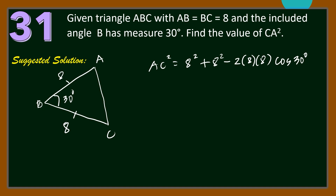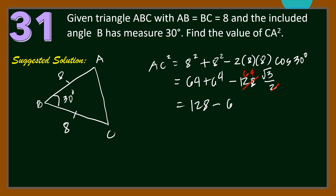So we have 8 squared is 64, and 2 times 8 times 8 is 128, and cosine 30 degrees is square root of 3 over 2. Then 64 plus 64 is 128, and 128 times square root of 3 over 2 is 64 times square root of 3. Then we have AC squared equals 128 minus 64 times square root of 3.